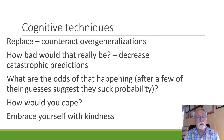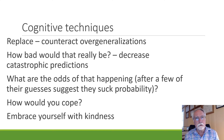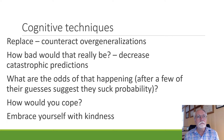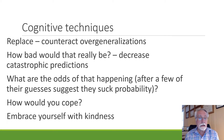You've got to counteract these overgeneralizations and ask yourself, 'How bad would it really be?' If you ask somebody for directions and they say 'I don't know' — what are the odds of that? It's like flying with somebody who's convinced turbulence means the plane will crash. 'How many planes do you know of that crashed from turbulence?' 'Not any.' So why are you convinced it'll happen to you? Ask people how they'd cope, and embrace yourself with kindness.